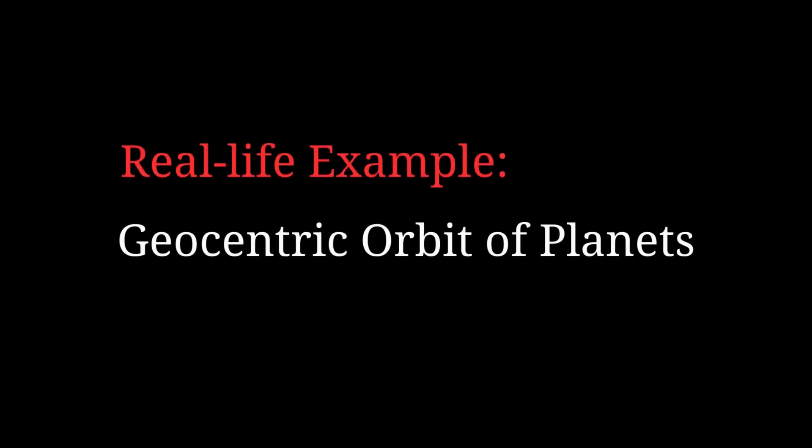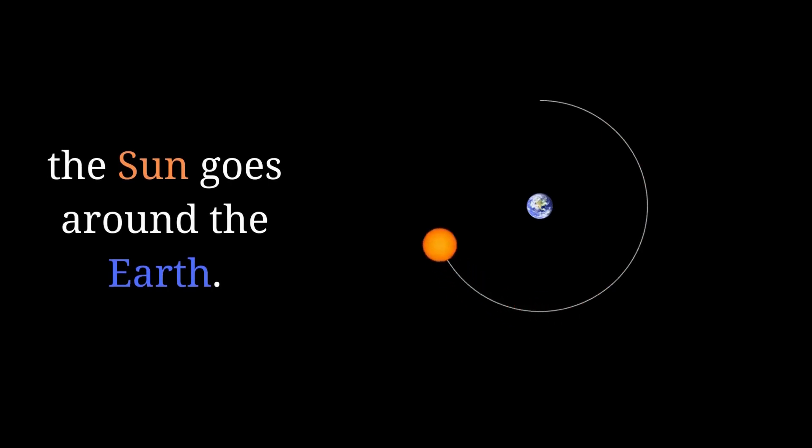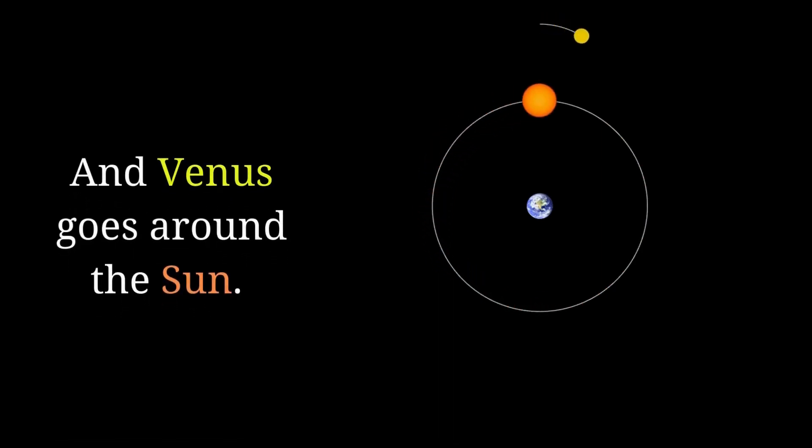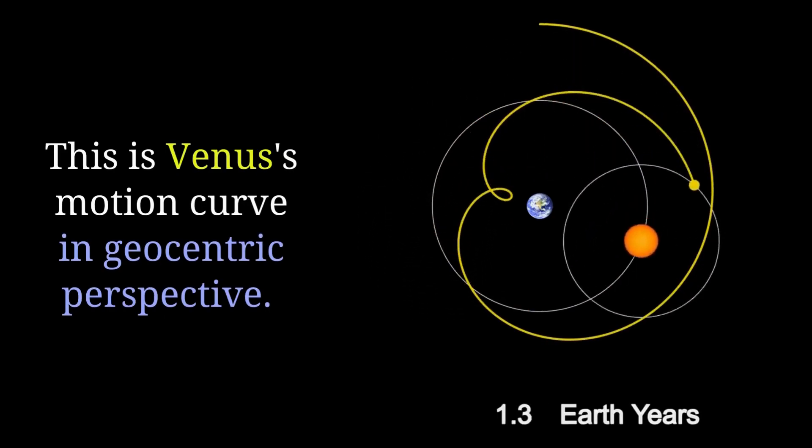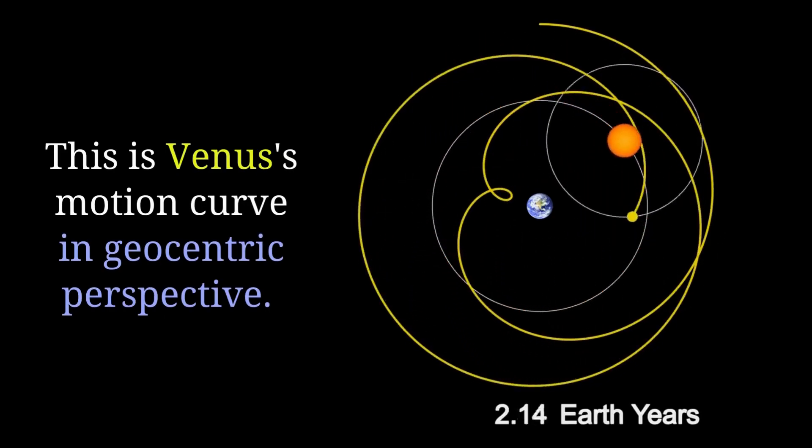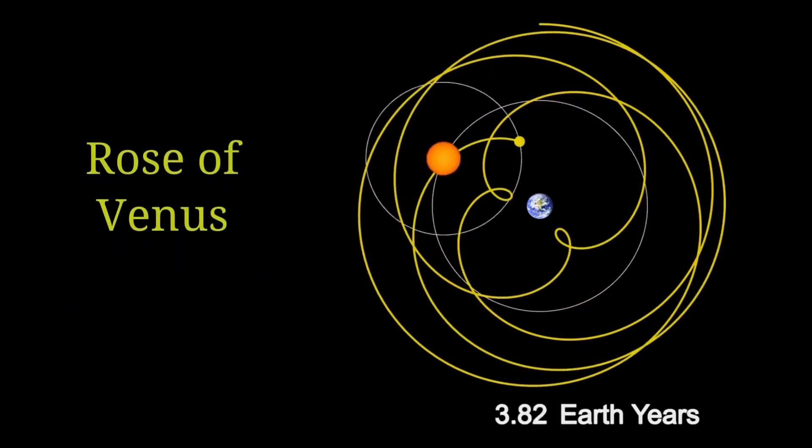An example of this two-axis system in real life is the geocentric orbit of planets. From an Earth-centered perspective, the Sun appears to revolve around Earth, while another planet, Venus as an example, revolves around the Sun. This results in Venus' orbit appearing like this from Earth's viewpoint. This is known as the Rose of Venus.